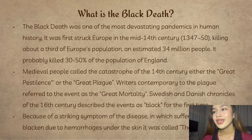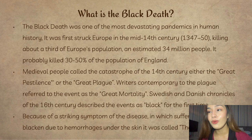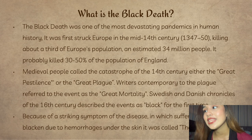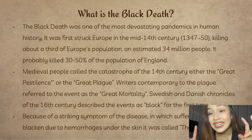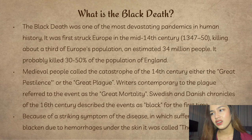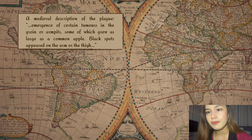It probably killed 30 to 50 percent of the population of England. Medieval people called the catastrophe of the 14th century either the 'Great Pestilence' or the 'Great Plague.' Writers contemporary to the plague referred to the event as the 'Great Mortality.' Swedish and Danish chronicles of the 16th century described the events as 'Black' for the first time, because of the striking symptom in which the sufferer's skin would blacken due to hemorrhages under the skin — thus it was called the Black Death.